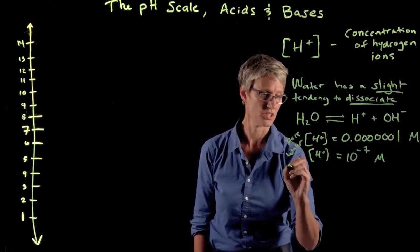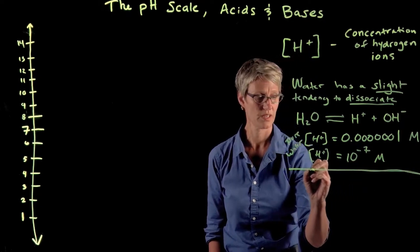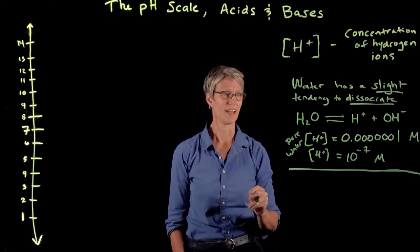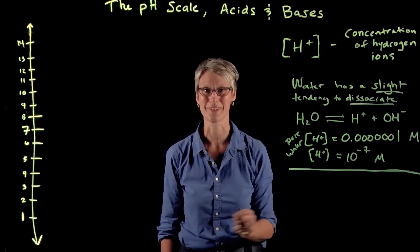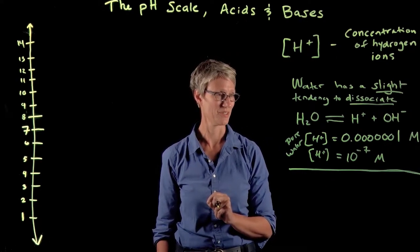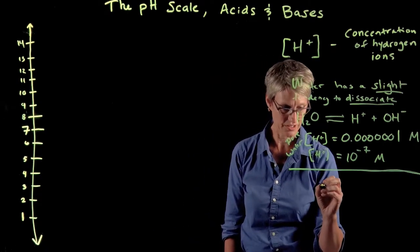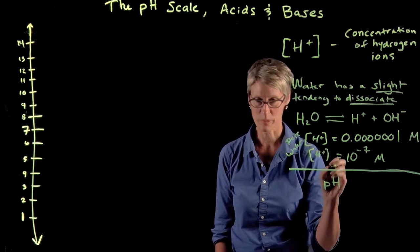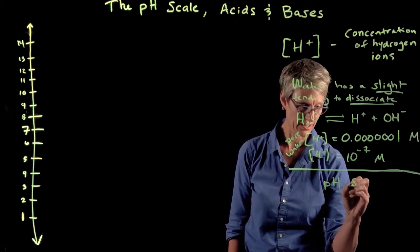This concentration of hydrogen ions is so important that we've actually invented a scale specific to it. Part of the reason for that scale is because we get tired of saying all those zeros. About 110 years ago, the pH scale was invented. pH—it's little p, big H—stands for power of hydrogen.